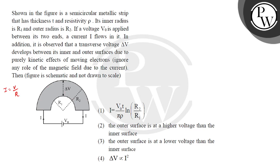If it is a distributed resistance, then the current value will be variable. To find the current distribution, we will calculate the resistance separately. If the current value is variable depending on the resistance, we need to calculate the equivalent resistance.